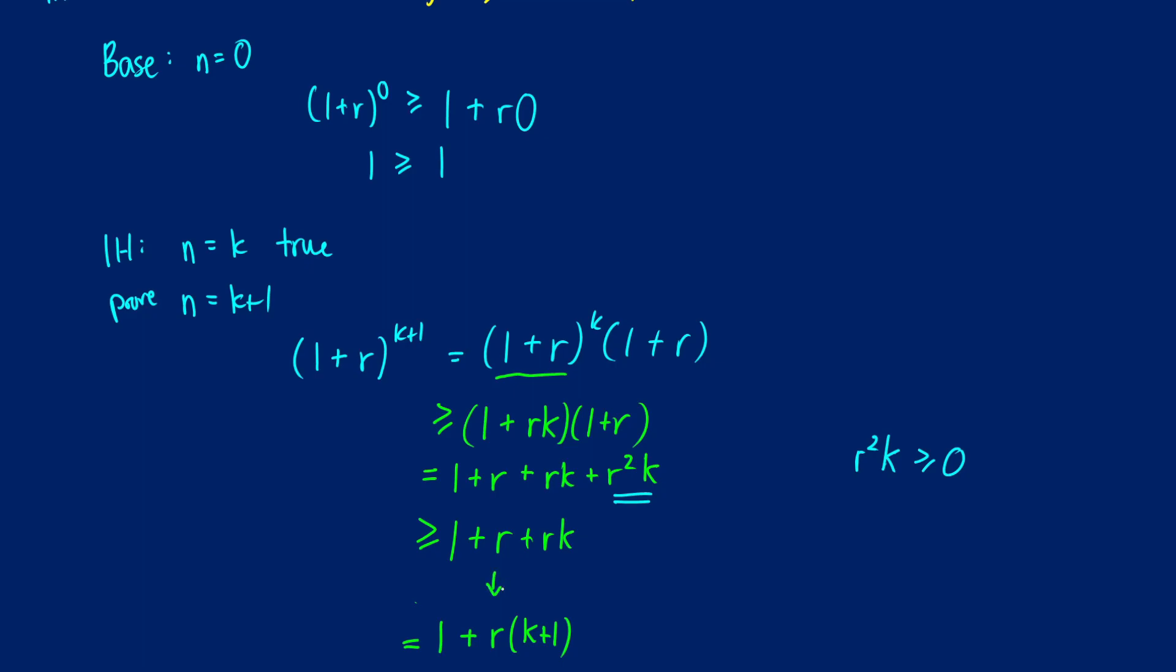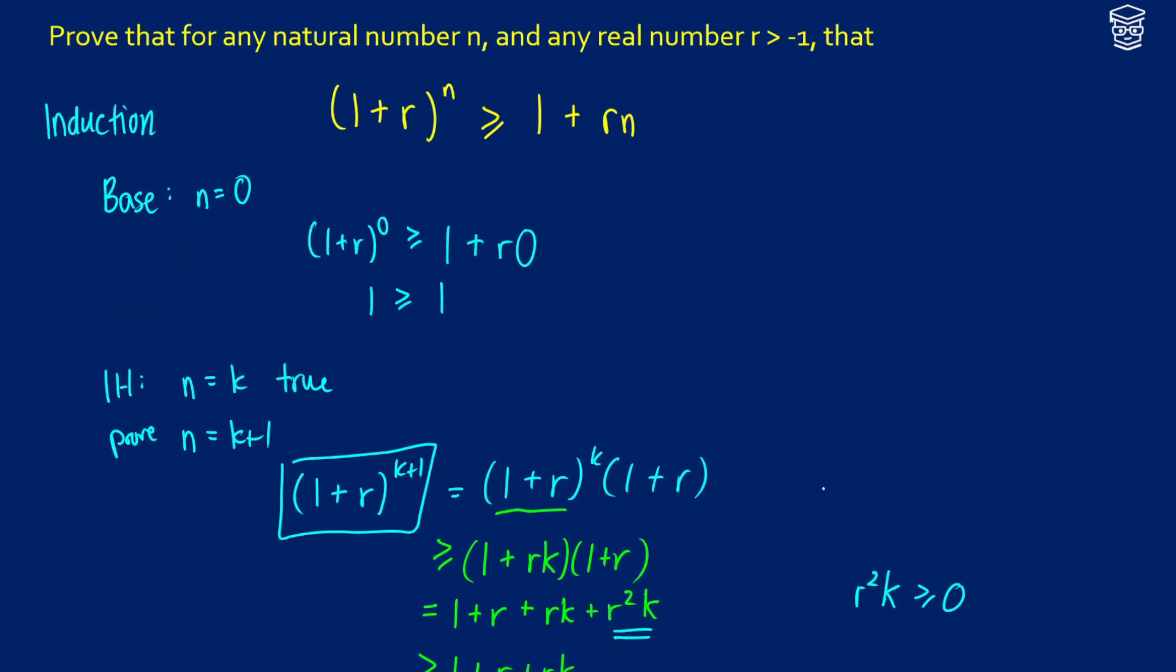So what that's saying in this case is that if we start with 1 plus r to the k plus 1, it will be greater than or equal to 1 plus r times k plus 1. And if we do our substitution back in with n, our induction hypothesis has been proven. We can now claim that yes, for all natural numbers n and any real number greater than negative 1, 1 plus r to the n is greater than or equal to 1 plus rn.